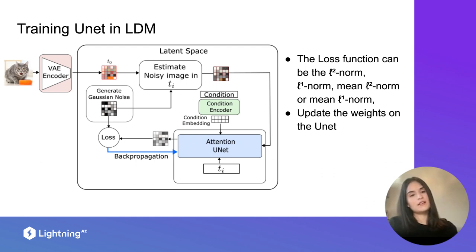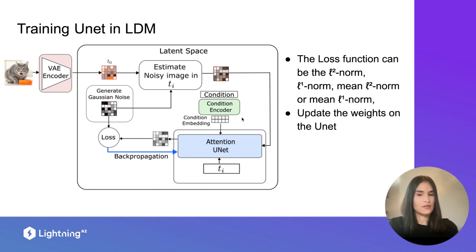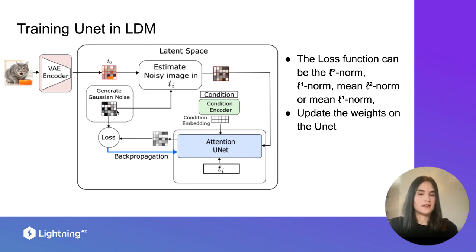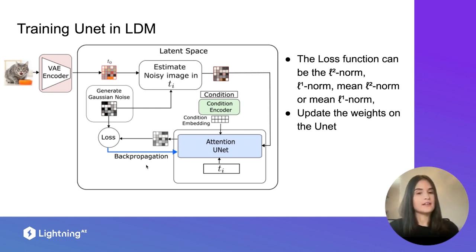Now let's think about how we train the U-Net in a latent diffusion model. We take Ramon, pass him through the encoder into latent space, generate random noise to contaminate the image, then give the noisy latent image to the U-Net along with the condition embedding and the timestep. The U-Net outputs a noise prediction, and we compute the loss between this prediction and the actual noise used — which can be L1 norm, L2 norm, or their means. We then use backpropagation to update the U-Net weights. In stable diffusion specifically, they use a latent space of 64×64 images, making training fast.